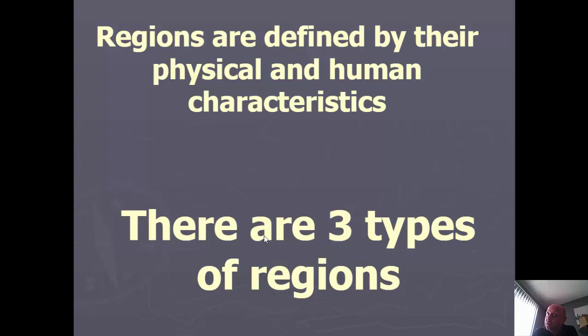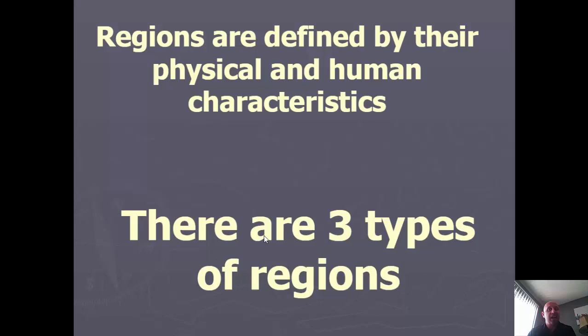Regions can be defined by any number of different characteristics. We could look at physical location — which areas are temperate or tropical, in a valley or on plains — and draw circles to create physical regions. Or we could look at human characteristics, like where a majority of Spanish speakers live in the United States, and create a region based on that. We could do the same with religion or ethnicity. Regions are really just a series of places that have something in common with one another.